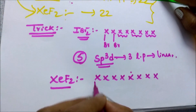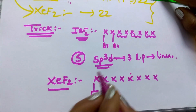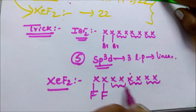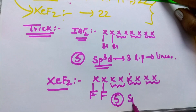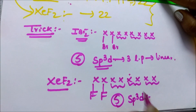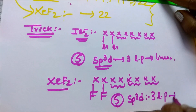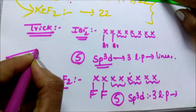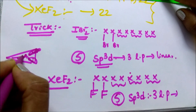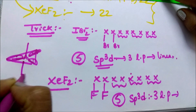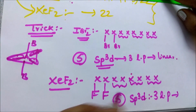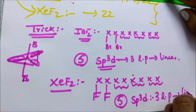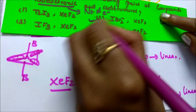Both IBr2- and XeF2 have SP3D hybridization with 3 lone pairs and a linear shape. So they are both isoelectronic and isostructural. This is the correct answer.